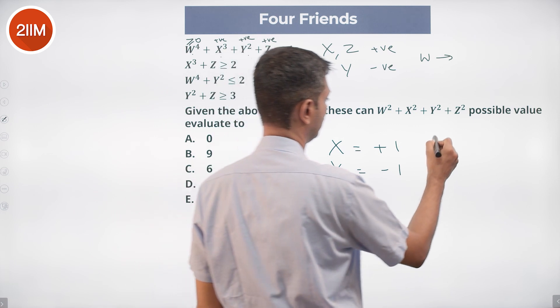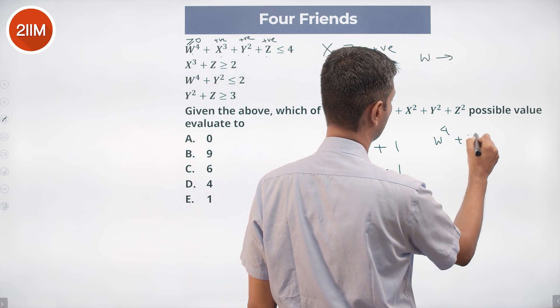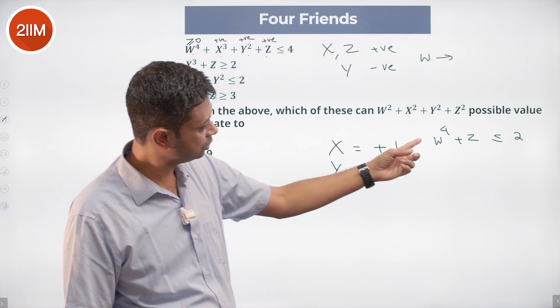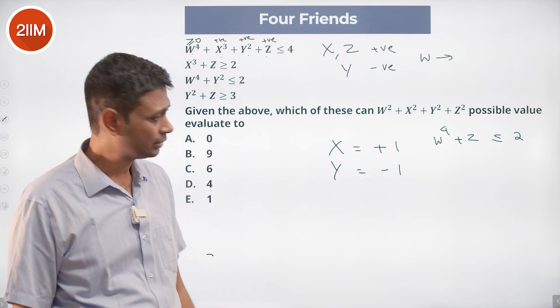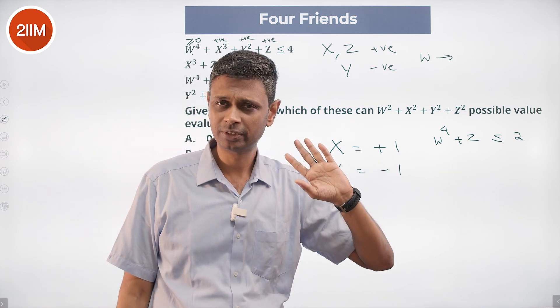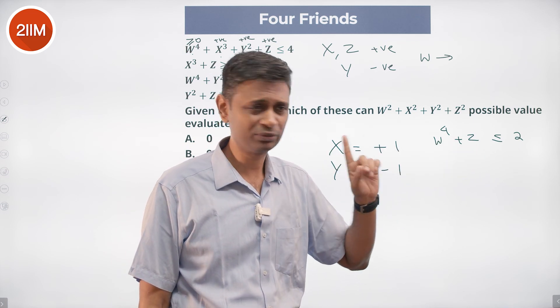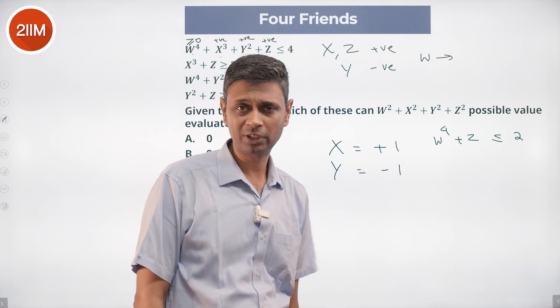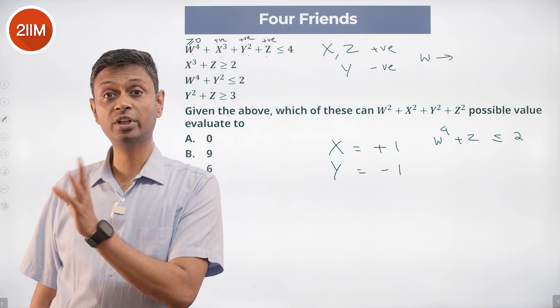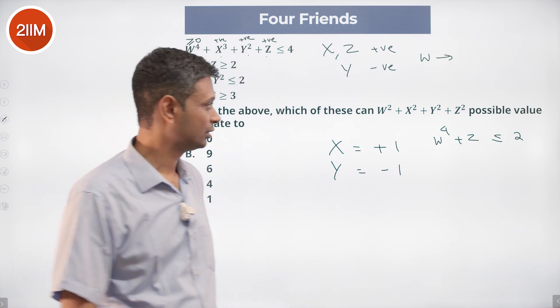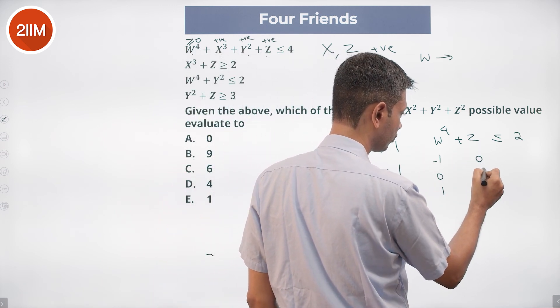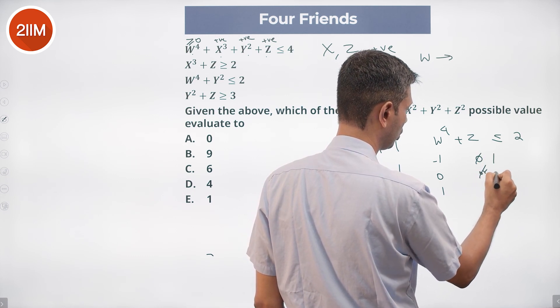Now we know W⁴ + Z is less than or equal to 2. This could be 0, minus 1, plus 1. Z is positive, 1 or 2. This cannot be 3 or more. If this is 3, there's no room for W⁴. W cannot be beyond 2 or more. It cannot be minus 2 or lesser. So W is minus 1, 0, or 1. Z cannot be 0, it's 1 or 2.